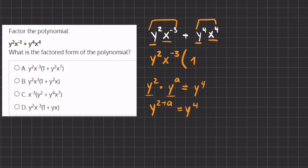Because when we multiply two variables together with the same base, we are adding their exponents. So 2 plus a should give us 4, meaning that a has to be equal to 2.